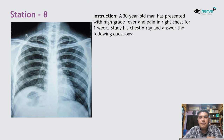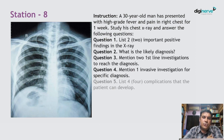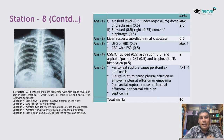Station 8: A 30-year-old man presented with high-grade fever and pain in the right chest for one week. On the chest X-ray, there is an air-fluid level on the right dome of the diaphragm and elevation of the right dome of the diaphragm, which is very suggestive of a liver abscess or subdiaphragmatic abscess.